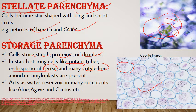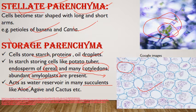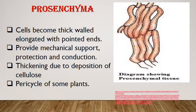Storage parenchyma cells have special plastids called amyloplasts, which are meant for storage of starch. In addition, they act as water reservoirs in some succulents — plants that grow in dry areas with fleshy leaves — such as aloe vera, agave, and cactus. The water storage function is also carried out by parenchyma cells.